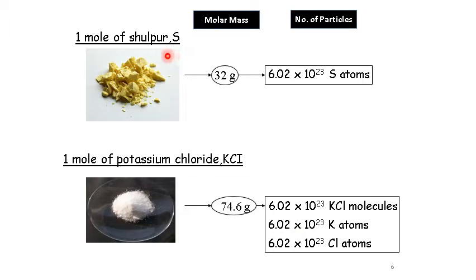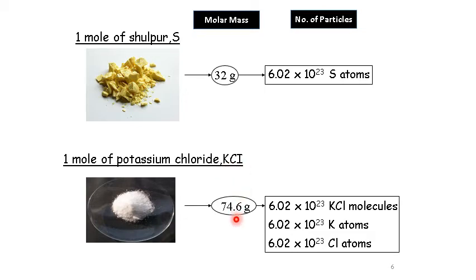Let's look at two examples. One mole of sulfur: if you check the molar mass, it's equal to 32 grams. At the same time, it also equals 6.02 times 10²³ sulfur atoms. One mole of potassium chloride equals 74.6 grams — you can check by adding the relative atomic masses of potassium and chlorine. It also equals 6.02 times 10²³ potassium chloride formula units, with one times Avogadro's number for potassium atoms and one times Avogadro's number for chlorine atoms as well.